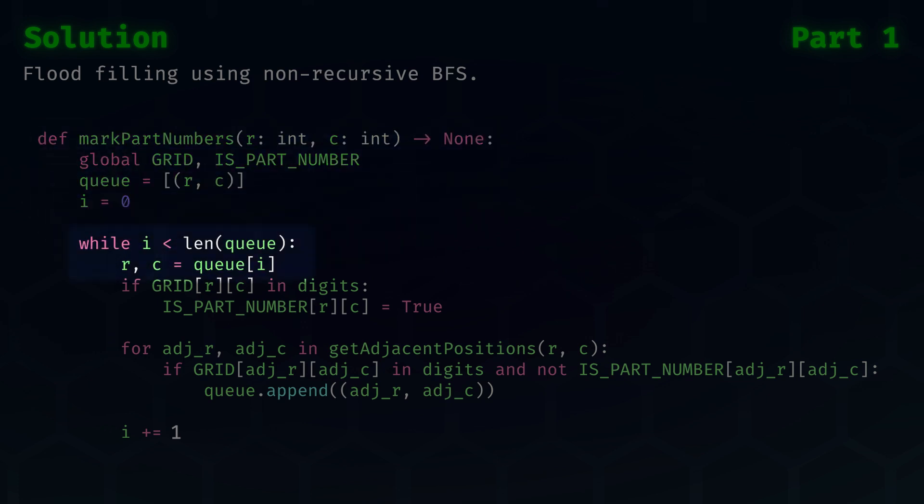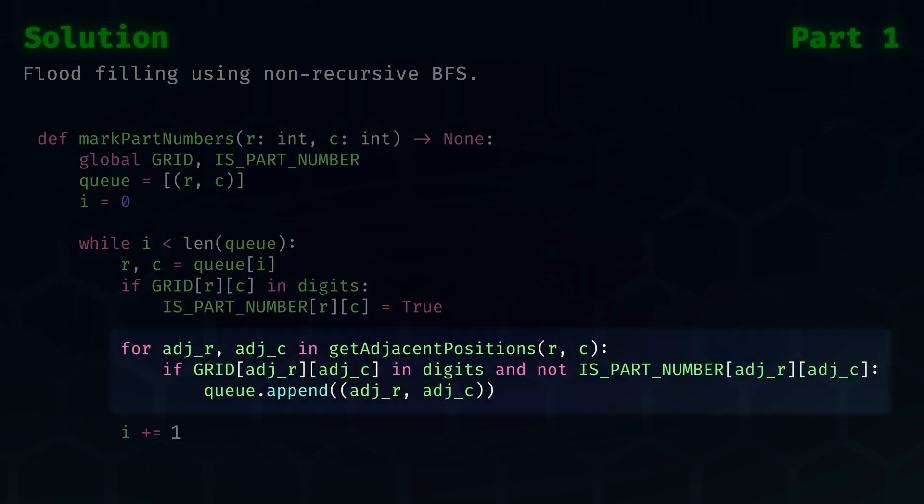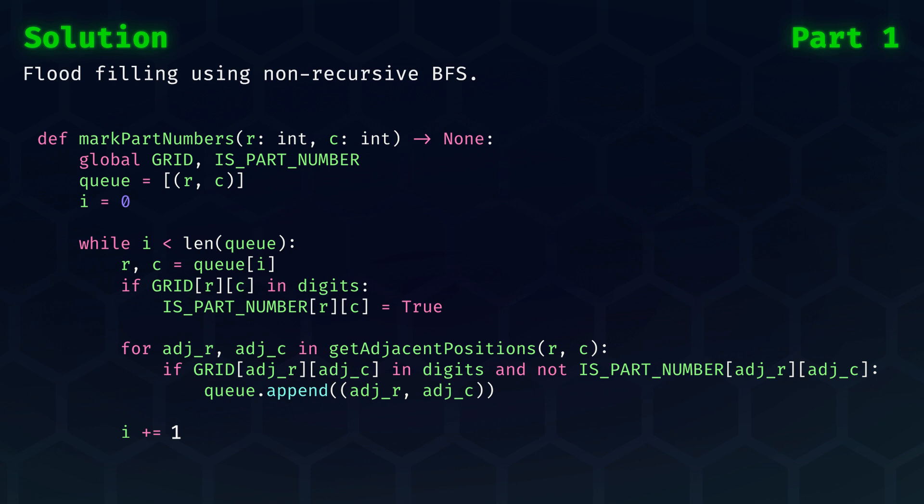Then, while I is less than the length of the queue, we know that there are still new positions to explore as part of our search. So we take the row and column from the queue at index I, and we check if the grid at this position is a digit. If it is, then it is a part number, and we mark it in the IS part number grid. Then we go over the adjacent positions of the current row and column. If that is also a digit, and it is not yet marked as a part number, then we add it to the queue to expand our breadth first search. Lastly, we need to increment I to process the next item of the queue.